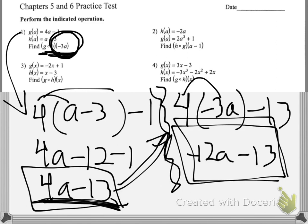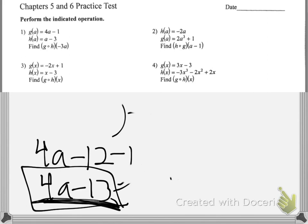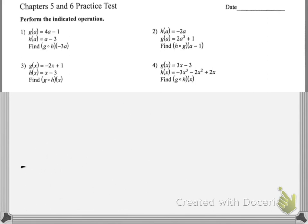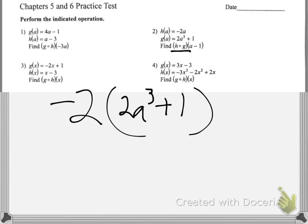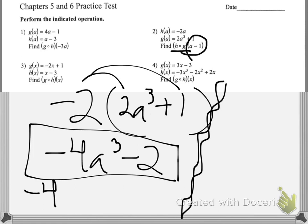Very similar process for the others. For number two, h compose g means start with the h function, which is negative 2 times something, then plug g into it — that's 2a to the third plus 1. Distributing the negative 2 gives negative 4a cubed minus 2. That's h compose g. Then we need to plug in a minus 1, so it becomes negative 4 times something to the third minus 2, where that something is a minus 1.